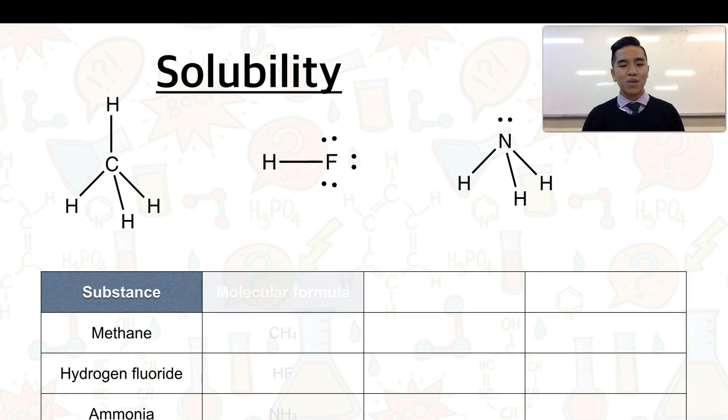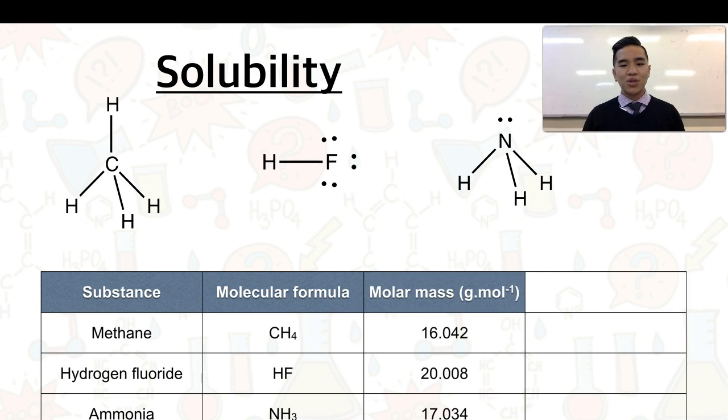Here we've got three different gases: methane, hydrogen fluoride and ammonia. We can start off and look at their molecular formula. Another thing that we can also compare is their size. In particular, we're talking about mass. If we were to find the molar masses of these compounds, you can see that they are all quite similar.